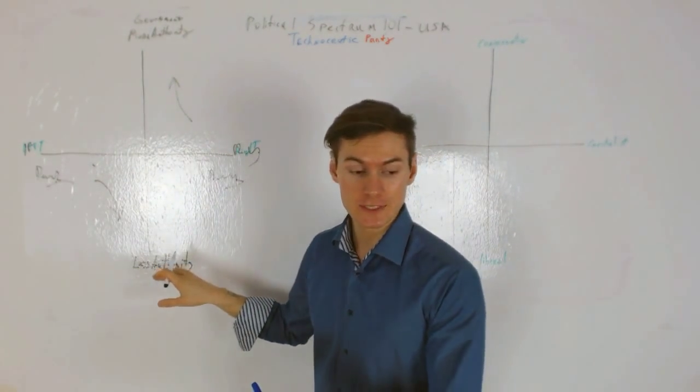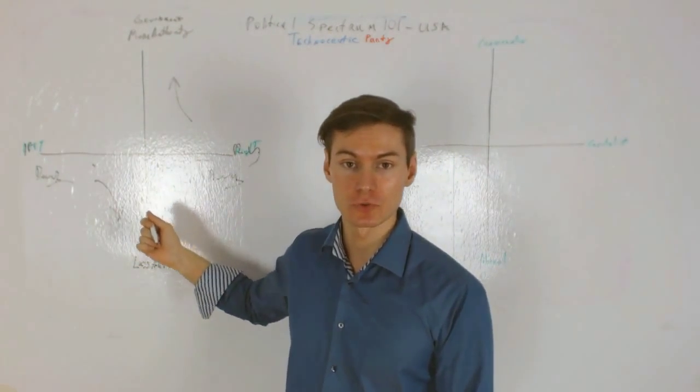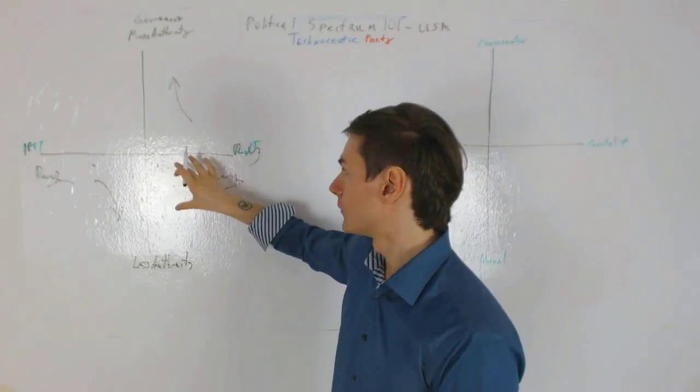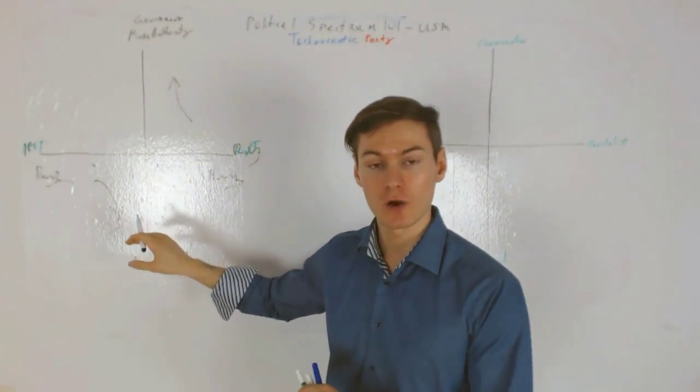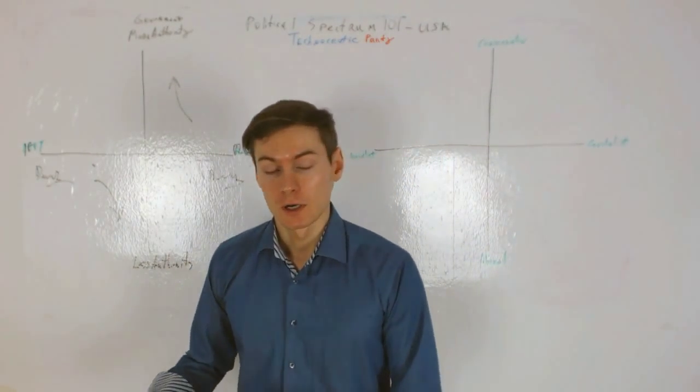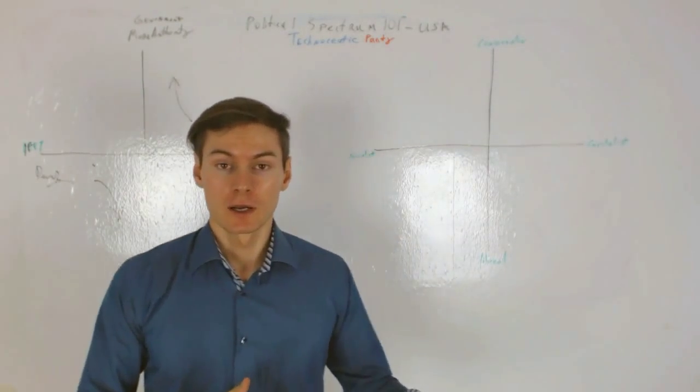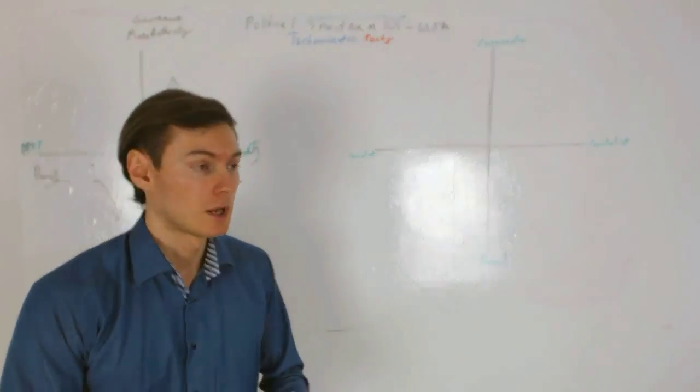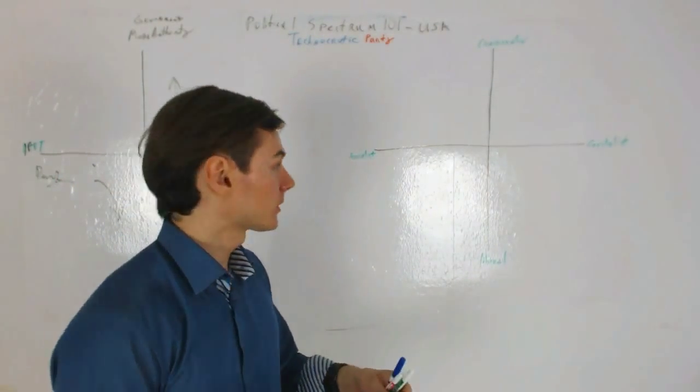So each Democrat or Republican, they either want more government, or they want less government. The problem with this is that, well, that's not necessarily true. Obviously, we have political individuals that either want more government or less government, more welfare, less welfare, more liberty for individuals, more corporate, more social, but in reality, it's much more complicated.